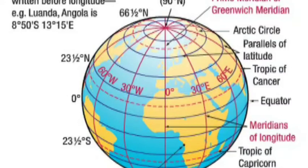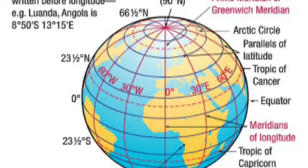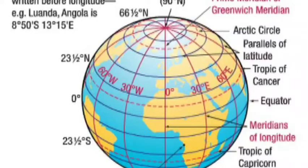The equator is the main line of latitude. It divides the Earth into two halves. The portion towards the North Pole is called the Northern Hemisphere, and the portion towards the South Pole is called the Southern Hemisphere.